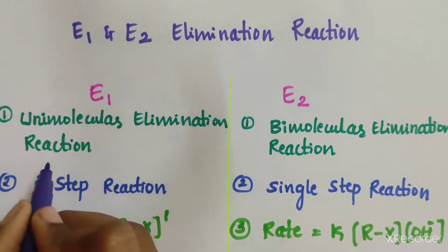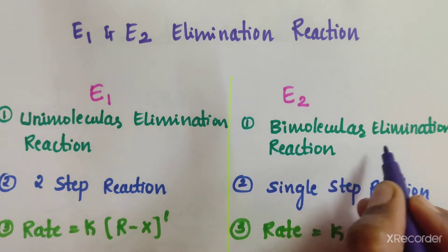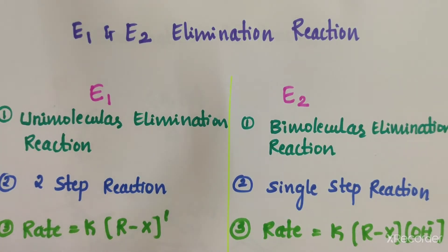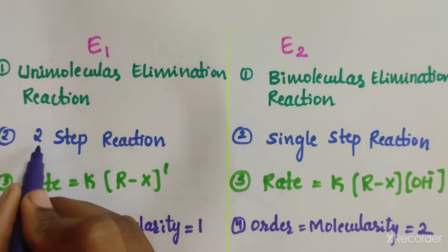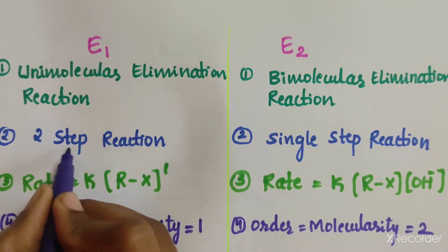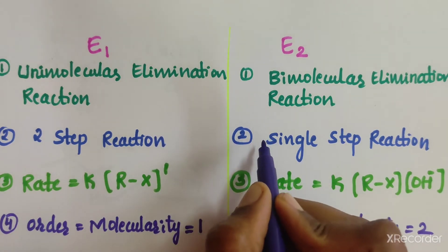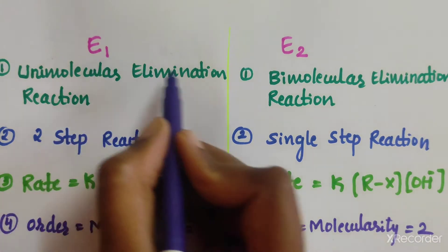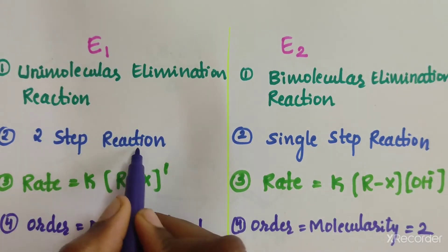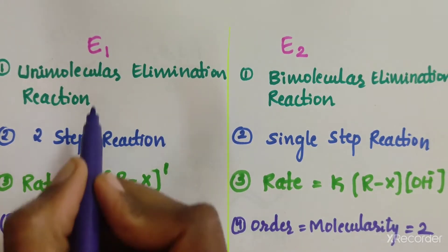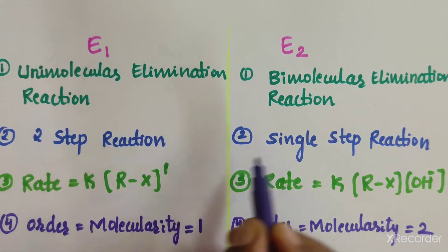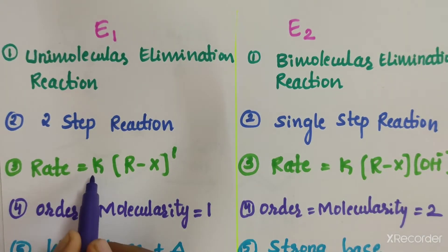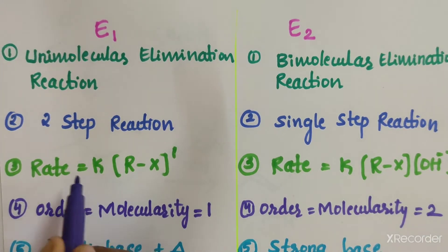E1 is a unimolecular elimination reaction and E2 is a bimolecular elimination reaction. The second difference is that E1 is a two-step reaction and E2 is a single-step reaction. Don't confuse these — E1 is a two-step reaction and E2 is a single-step reaction.